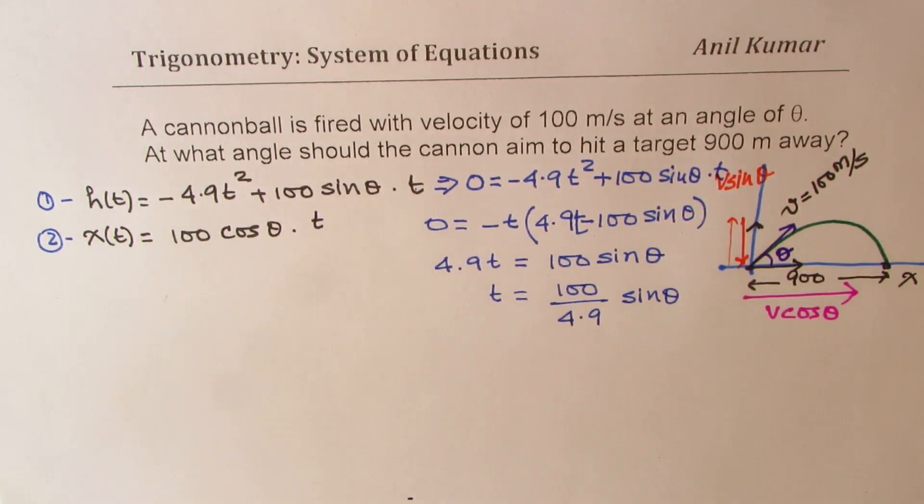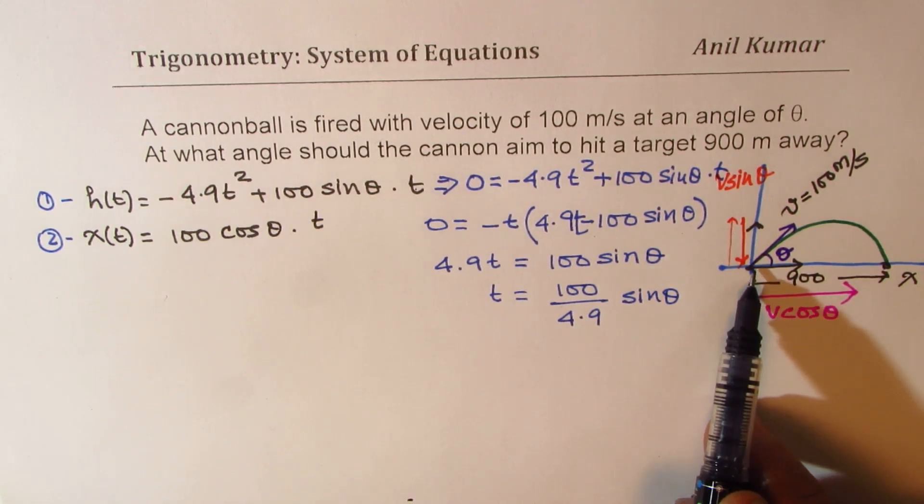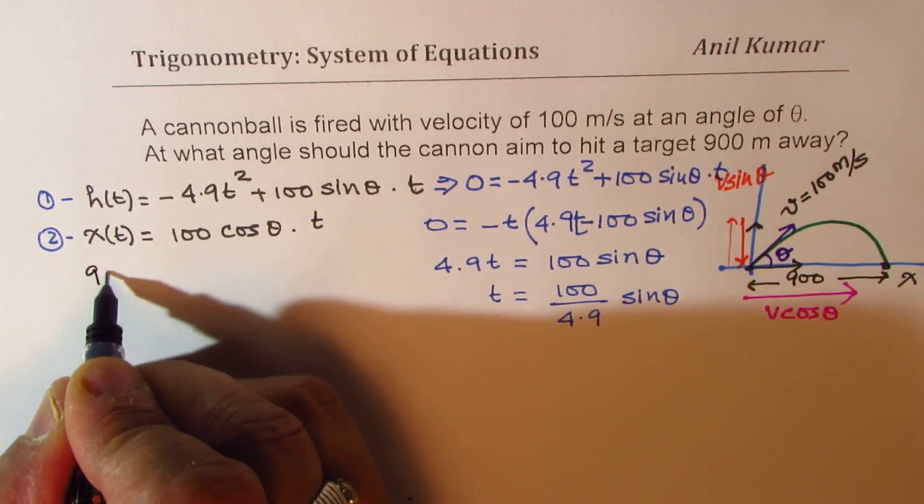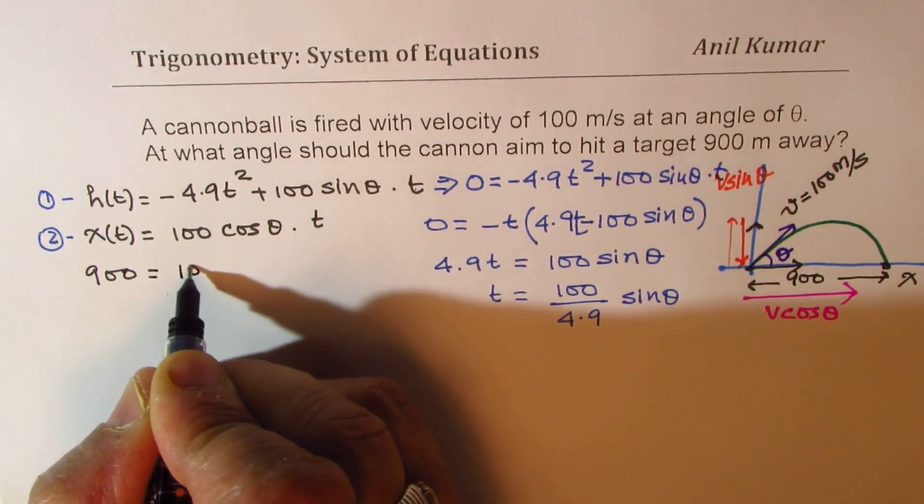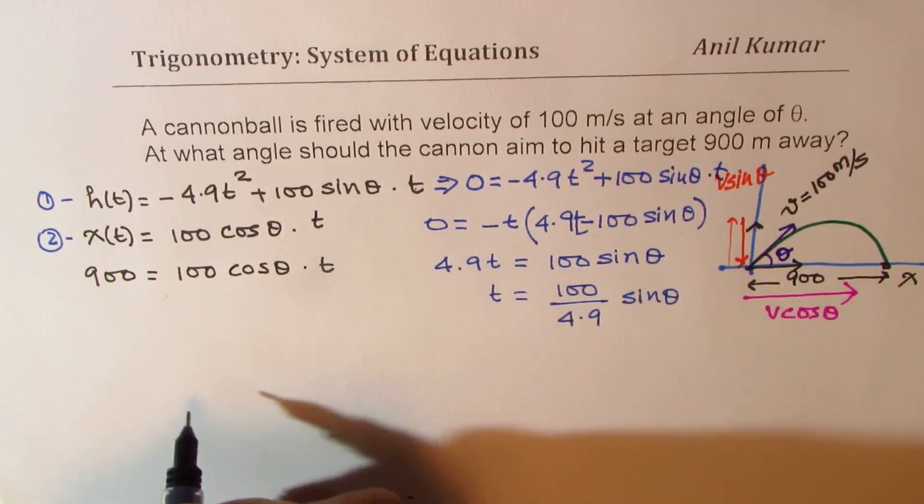Now, let us continue with the second equation. The distance which a cannonball has to travel horizontally is 900. Therefore, 900 should be equal to 100 cos theta times t.